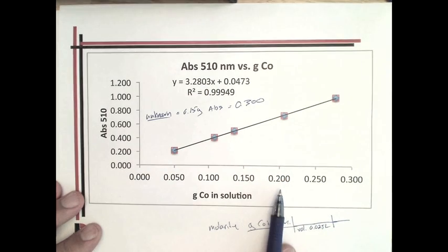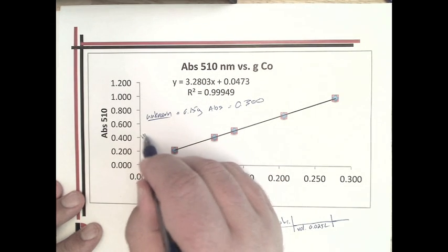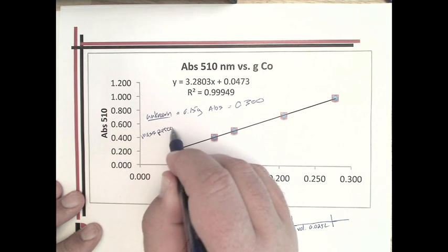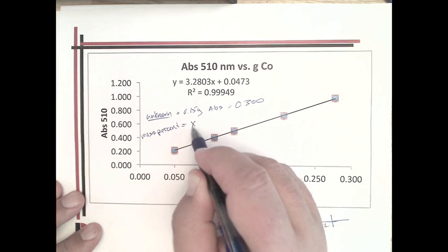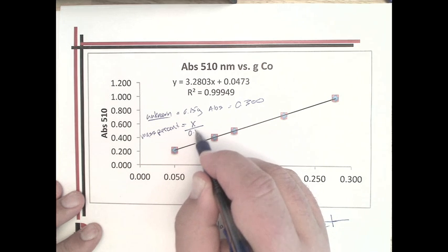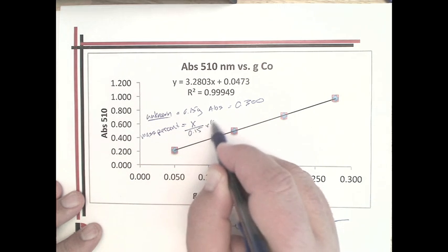Then x would give you the grams of cobalt, and the mass percent would be equal to x divided by 0.15 in this case, times 100%.